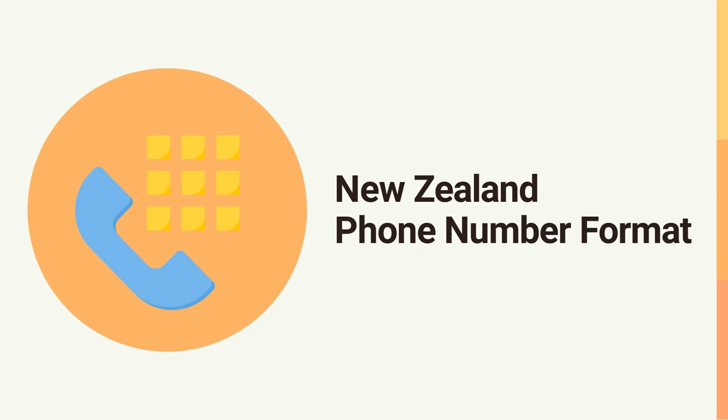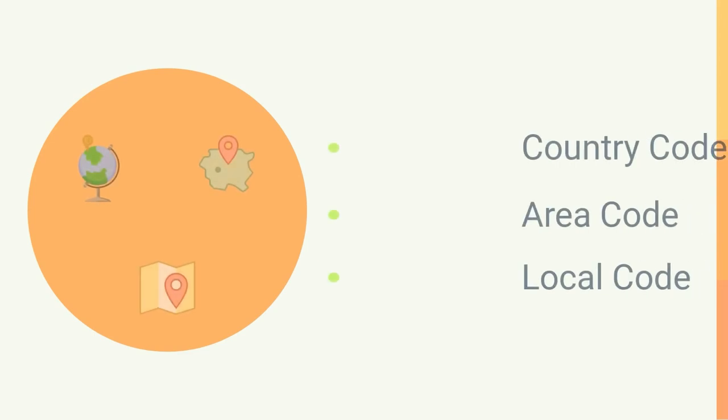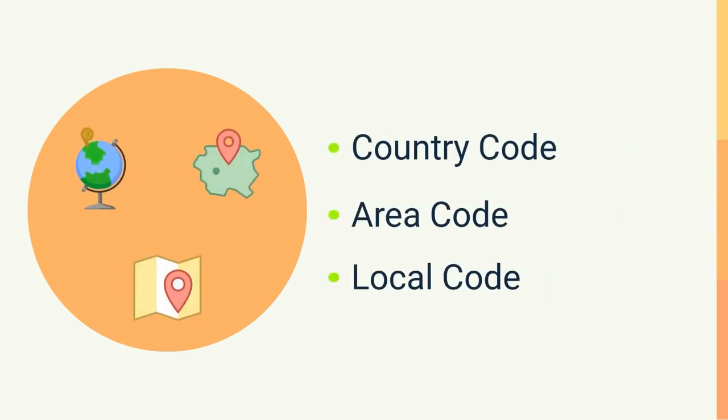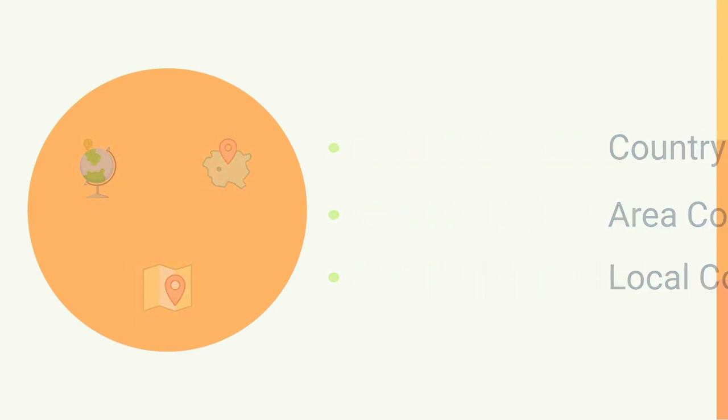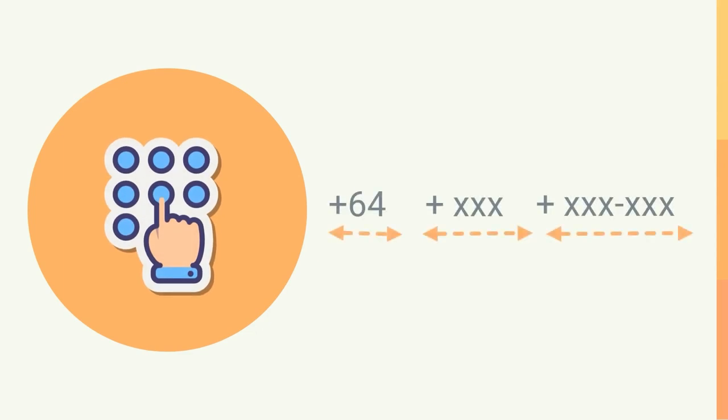To dial a New Zealand phone number, you would typically combine the country, area, and local codes. The full format for a New Zealand phone number is: plus 64, followed by the area code and a local phone number.